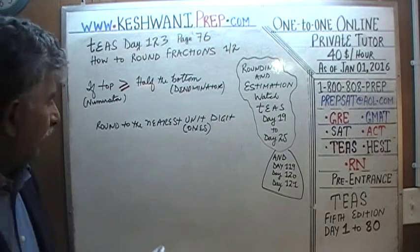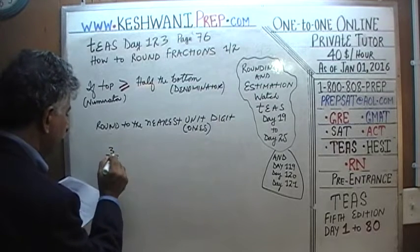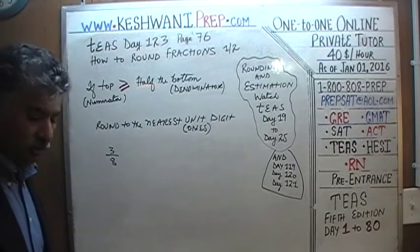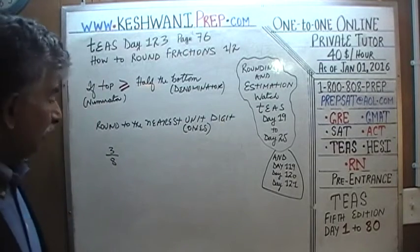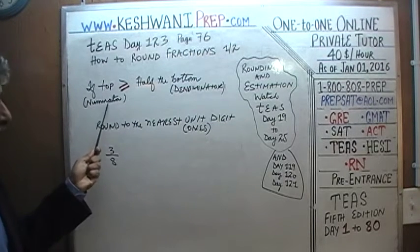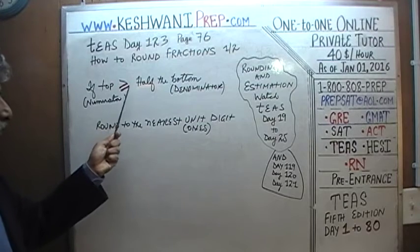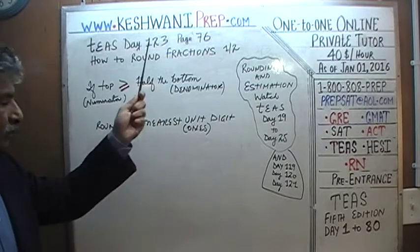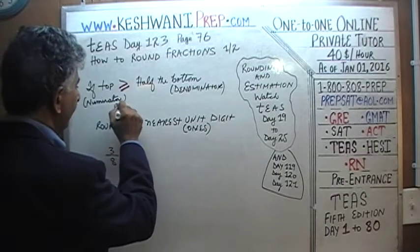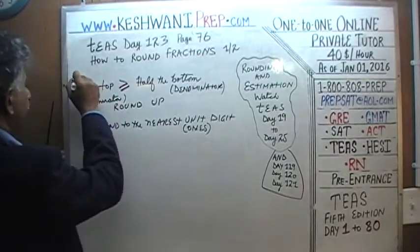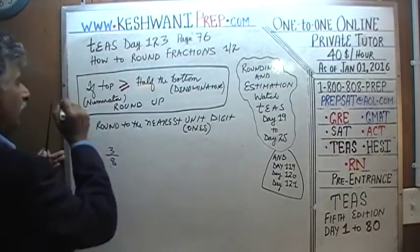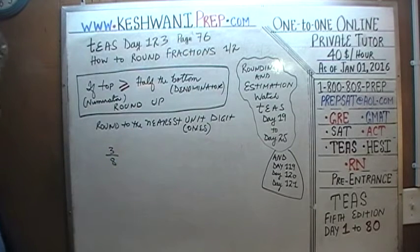We are being asked to round 3/8 to the nearest unit digit, or to the nearest ones digit. We learned yesterday that as long as the numerator is greater than or equal to half the denominator, we have to round up.